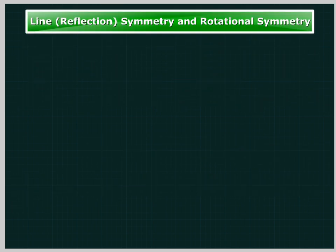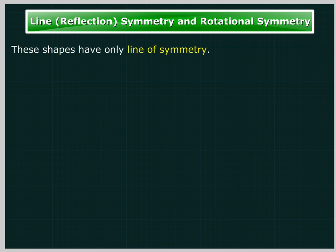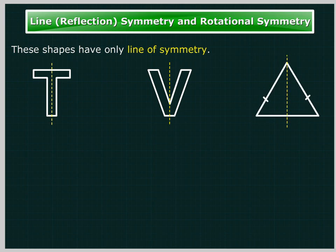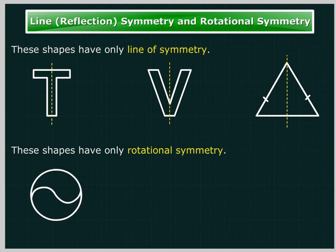Line symmetry and rotational symmetry. These shapes have only line of symmetry. These shapes have only rotational symmetry.